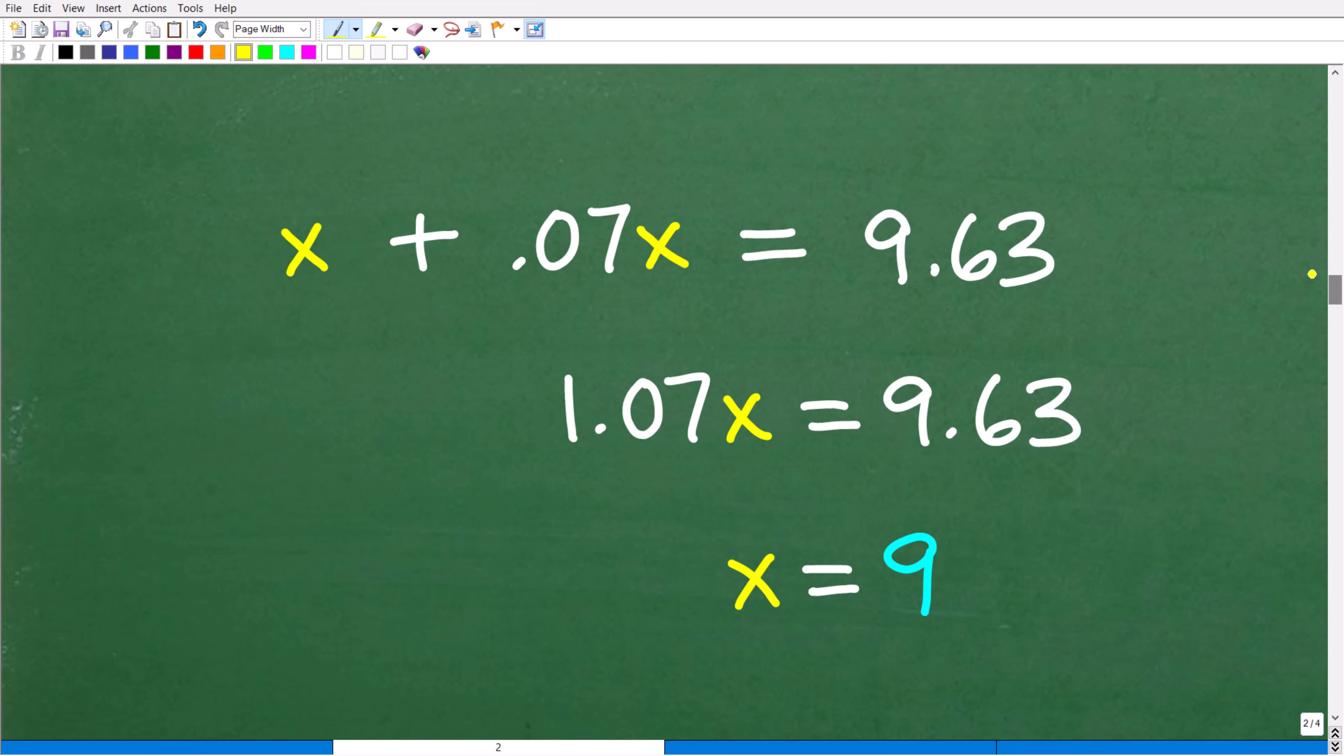So what we have here is this basic linear equation. So X plus 0.07X is equal to 9.63. Again, X is the cost of the product. 0.07X is the sales tax for that respective product at that price.